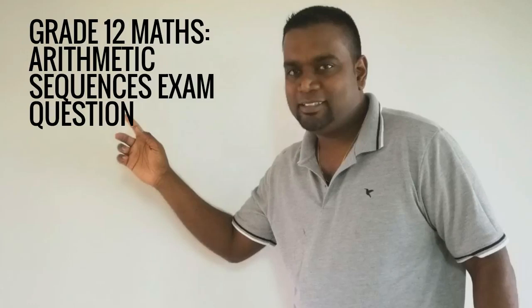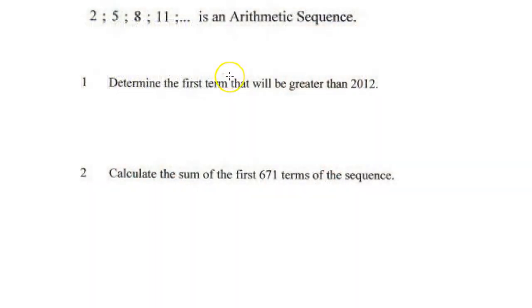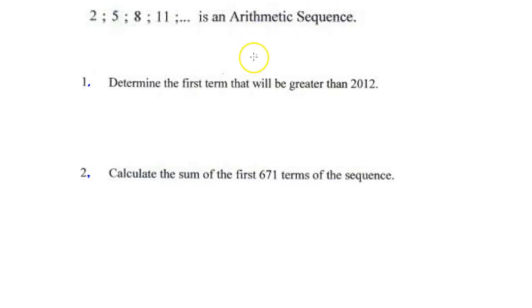Hi guys, in this video we're going to be looking at number patterns. The first question says: 2, 5, 8, and 11 is an arithmetic sequence — determine the first term that will be greater than 2012. Firstly, we must take note that this is an arithmetic sequence. In an arithmetic sequence, the first difference is constant.